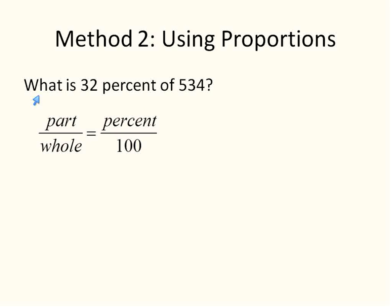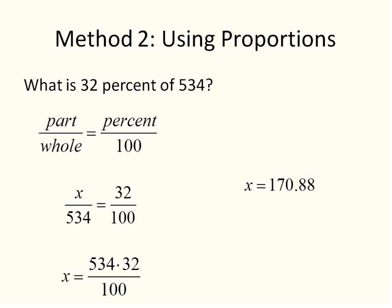I'm going to identify from this sentence that x is our part. That's what we don't know. Our whole amount is 534, so that one's going to go underneath. And our percent is 32, so that will go in the numerator of the second fraction. Then we solve using cross multiplying: 534 times 32 over 100. And our final answer is 170.88. We got that before. This is the same question we solved before, we're just looking at it in a different way. You get exactly the same answer.